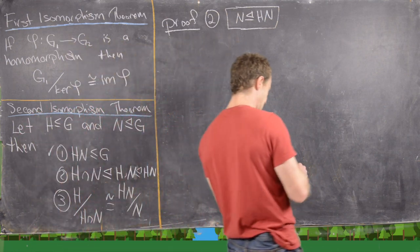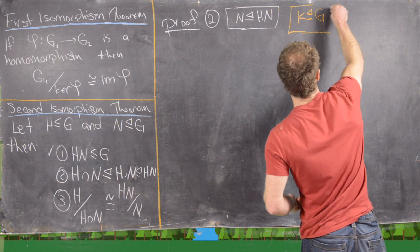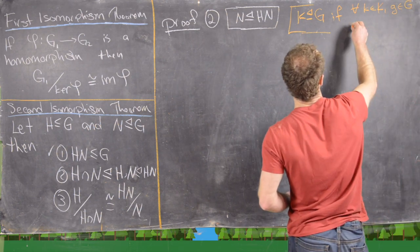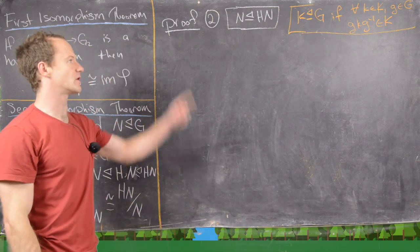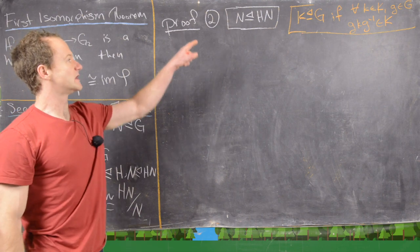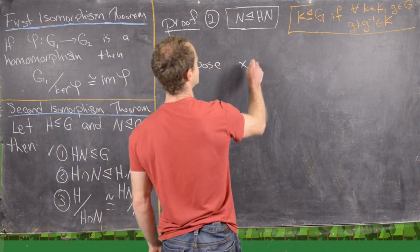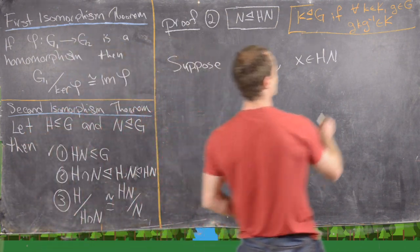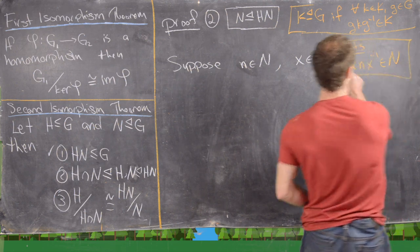Recall the element-wise definition of a normal subgroup: K is a normal subgroup of G if for all k in K and g in G, gkg⁻¹ is an element of K. This is a clean element-wise definition that doesn't require anything about cosets. So for our setup, suppose n is in N and x is in HN — what we want to show is that xnx⁻¹ is in N.